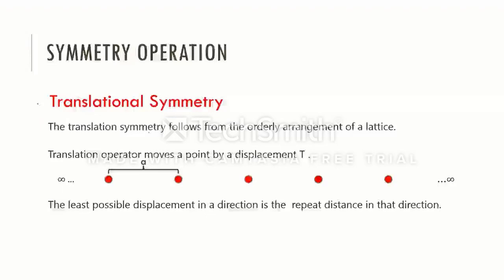The first one is translational symmetry operation. This translational symmetry operation follows from the orderly arrangement of a lattice. Translational symmetry operator, when applied to a point, moves the point to another identical position. If a pattern has translational symmetry, then the whole pattern can be obtained by mentioning the repeat identity and translation vector. For instance, the repeat identity is a dot here in this pattern. This dot, when translated by the repeat distance, gives us the complete pattern.